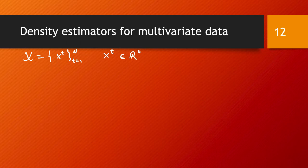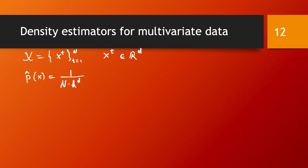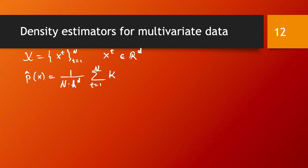And the multivariate kernel density estimator is in this case p hat of x is similar as before, it's 1 over n times, it's not just h, but it's h to power d because we have a box with h on all d dimensions. And then it's a sum for all the data points of this kernel function applied to x minus xt over h.